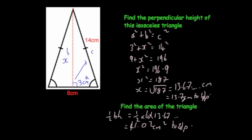To work out the area of the triangle, once you've found the height it's simply half base times height. So if you've got an isosceles triangle and want to find the height, use Pythagoras' theorem by splitting it in half. If you want to find the area and you know the length of the diagonal and the base, split it, find the height using Pythagoras, and then do half base times height.